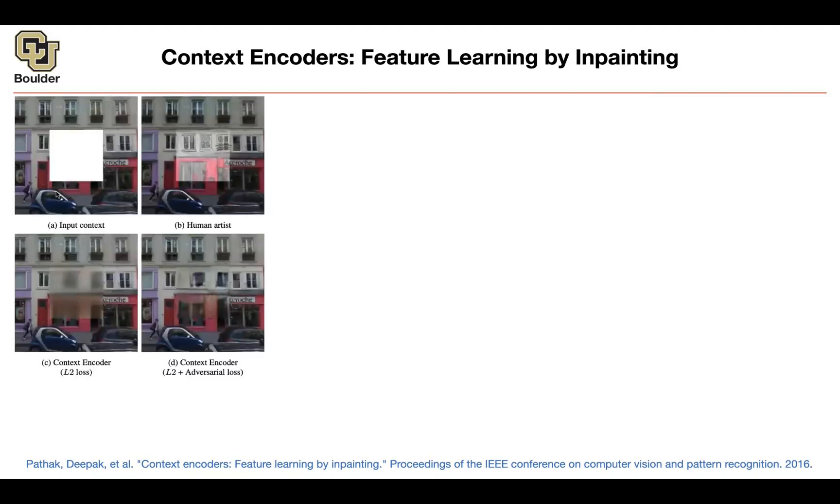So this is the part that is missing. And if you ask a human to imagine what's happening in this box, they are going to be able to do it if they are good artists. If you try to solve the same problem using an L2 loss, you're going to get some blurry outputs.